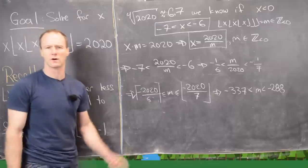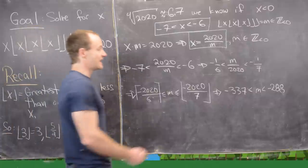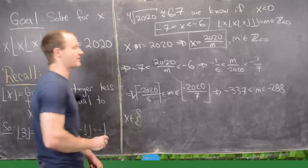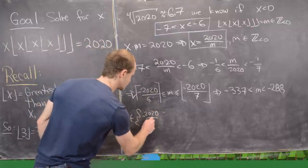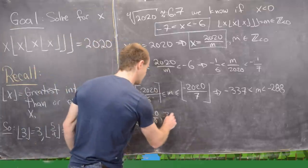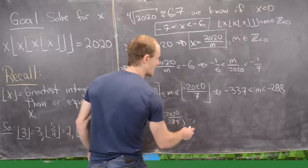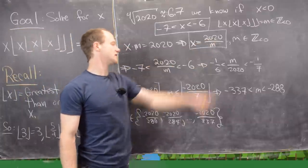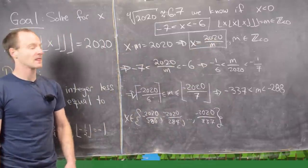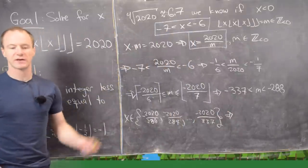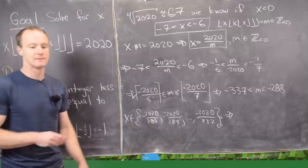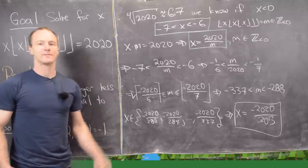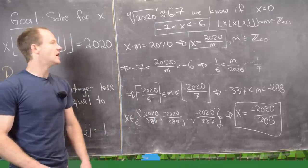Putting these possible values of m into x equals 2020/m, the possible solutions are x in the set {-2020/288, -2020/289, ..., -2020/337}. An exhaustive search shows that x equals -2020/305 works.